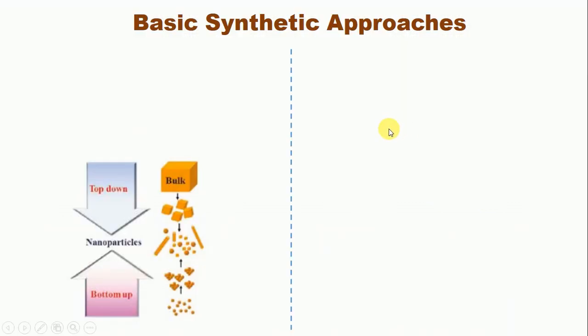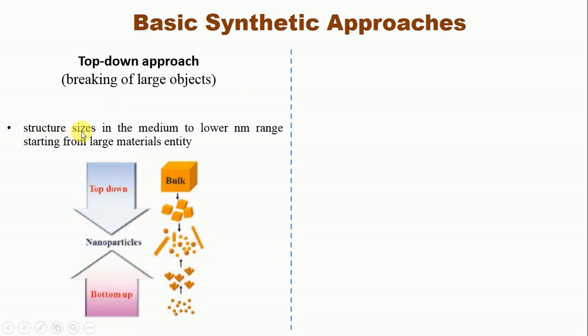Basic synthetic approaches. There are two types of basic synthetic approaches. Number one is top-down approach in which we break down large objects, called bulk materials, into small particles called nanoparticles. That's why it's called top-down approach. Structural sizes in the medium to lower nanometer range starting from large material entities.